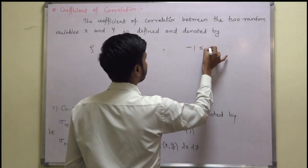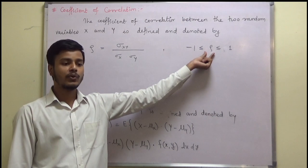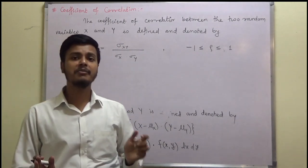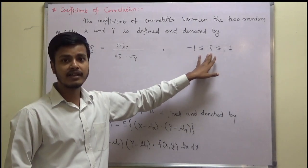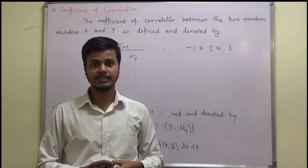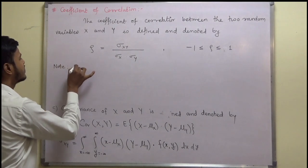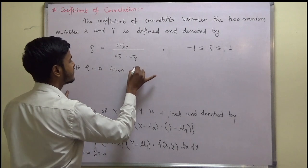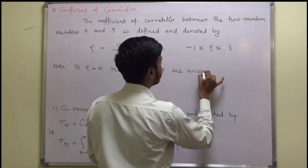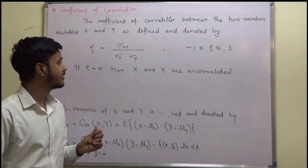This rho will lie between the values 1 and minus 1. If the coefficient of correlation is equal to 1, then we say that the random variables x and y are perfectly correlated. And if the value of rho is 0, then we say that the random variables x and y are not correlated. As a note: if rho equals 0, then x and y are uncorrelated or not correlated.